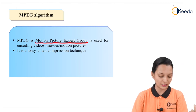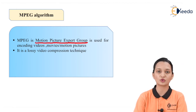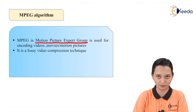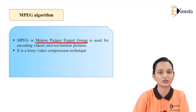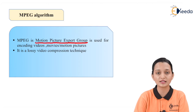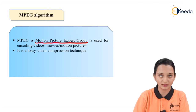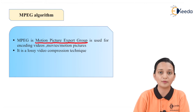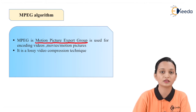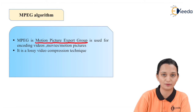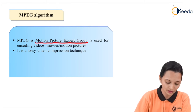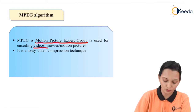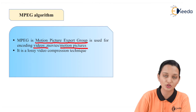We are able to use JPEG also for image compression purposes. Then why are we moving to MPEG? The simple answer is to overcome the drawbacks of JPEG. And it is possible by using MPEG. But most importantly, MPEG is used for encoding videos, movies, and specially motion pictures.